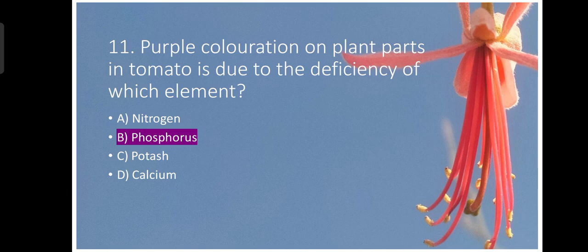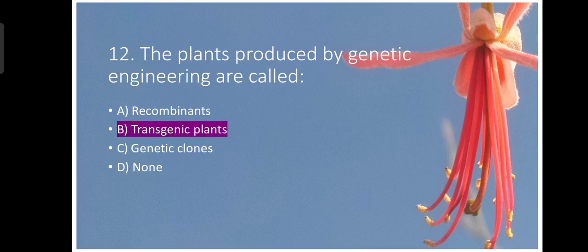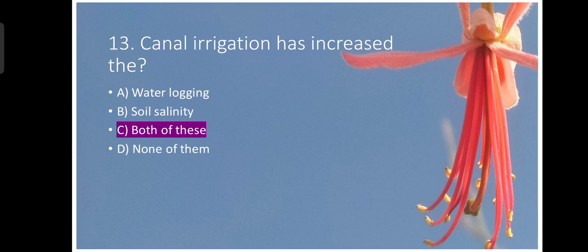Question number eleven. Purple coloration of plant parts in tomato is due to the deficiency of phosphorus. The plants produced by genetic engineering are known as transgenic plants. They are also known as GMO genetically modified organisms.